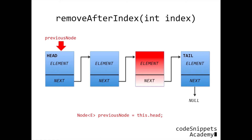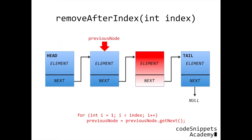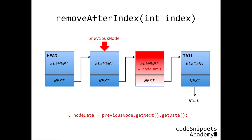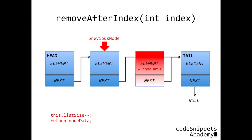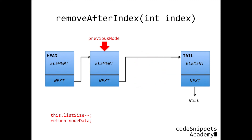If we want to remove at an index, we have a previous node and we set that to the head. Then we traverse the list until we get to the node right before the one that we want to remove. We store the data of the node we want to remove into a variable called node data. Then we set our previous node's next variable to the node that comes after the one we want to remove. Then we decrement our list size and return our node data. Since we have no direct access to the element we want to remove, the Java garbage collector will come and take it away. Since we have to traverse the list, this will take linear time.